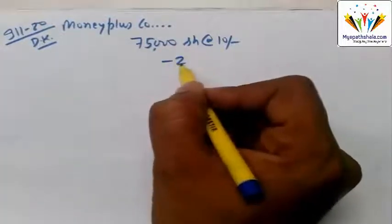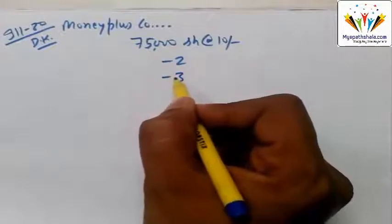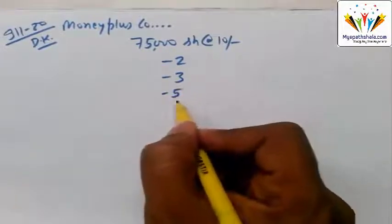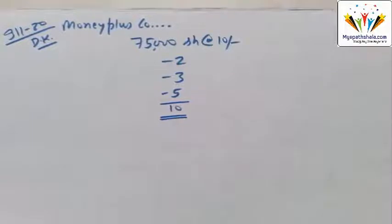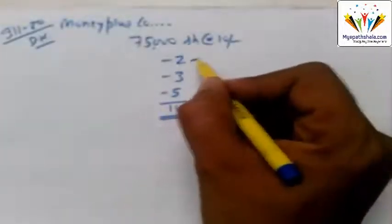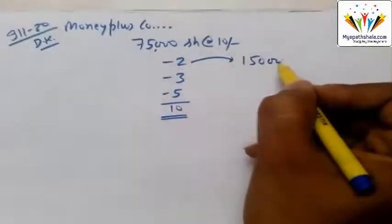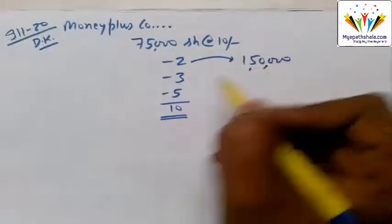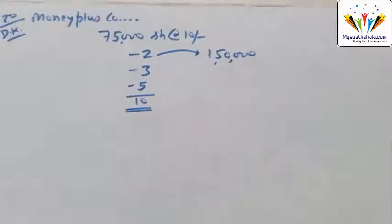The payment schedule is: 2 rupees on application, 3 rupees on allotment, and 5 rupees on call — totalling 10 rupees per share. The company received applications for 1,50,000 shares. We will now see how the company carried out distribution.